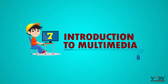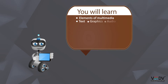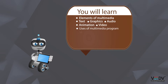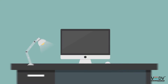Chapter 7: Introduction to Multimedia. You will learn: elements of multimedia — text, graphics, audio, animation, video — uses of multimedia programs, multimedia hardware, installing a multimedia CD, multimedia software, and how to play with Windows Media Player.